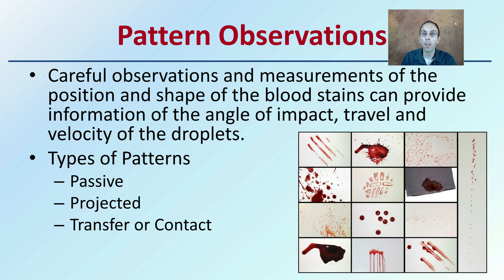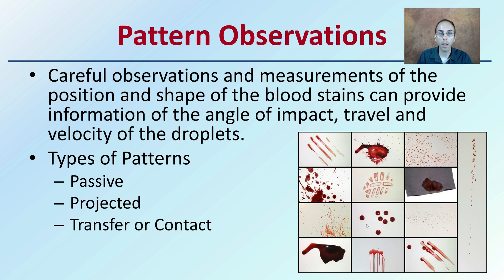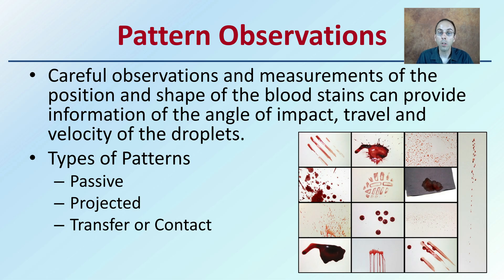So, pattern observations. We want to make careful observations and measurements of the position and shape of the blood stains because they can provide information on the angle of impact and travel velocity of the droplets. There are different types of patterns and we can classify them in general as passive, projected, transfer, or contact. All these can play an important role in determining what may have gone on at a crime scene.